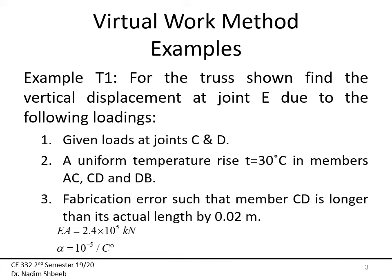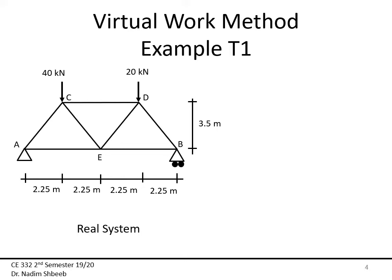For the truss shown on the next slide, we want the vertical displacement at joint E due to the following loadings: the given loads at joints C and D, a uniform temperature rise of 30 degrees Centigrade in members AC, CD, and DB, and a fabrication error such that member CD is longer than its actual length by 0.02 meters. I'm giving you EA which is constant for all: 2.4 times 10 to the 5 kilonewtons. The thermal coefficient alpha is 10 to the minus 5 per degrees Centigrade.